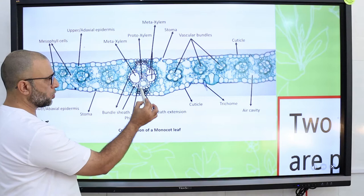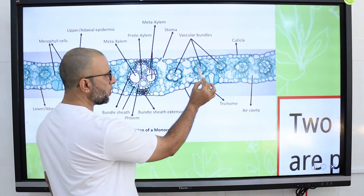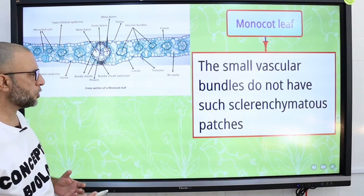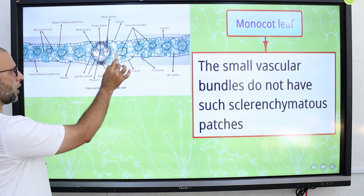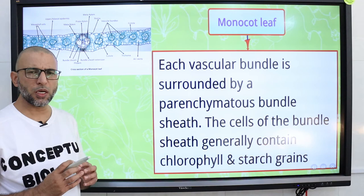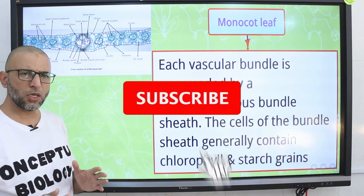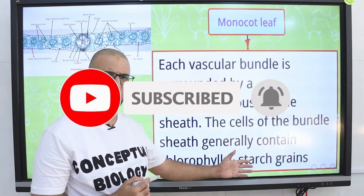Bundle sheath extensions are present only in large vascular bundles; in small vascular bundles, bundle sheath extensions are absent. Each vascular bundle is surrounded by non-vascular cells called the bundle sheath, which is composed of parenchyma cells. The cells of the bundle sheath in monocot leaf have chloroplasts and also store starch grains, which is why the bundle sheath is also known as the starch sheath.